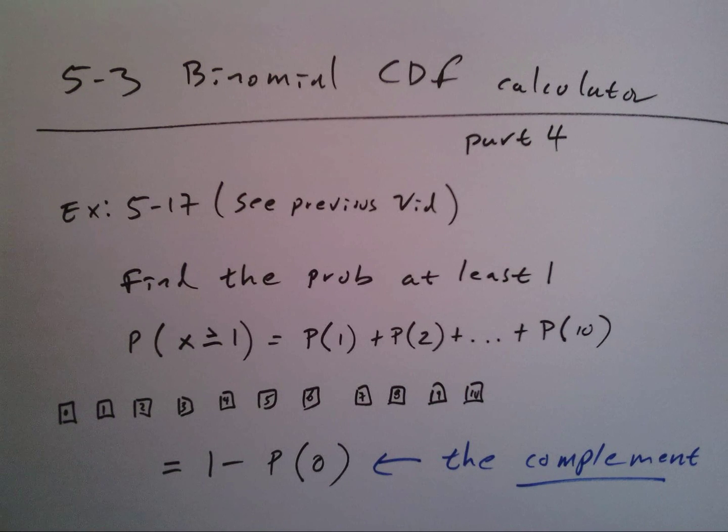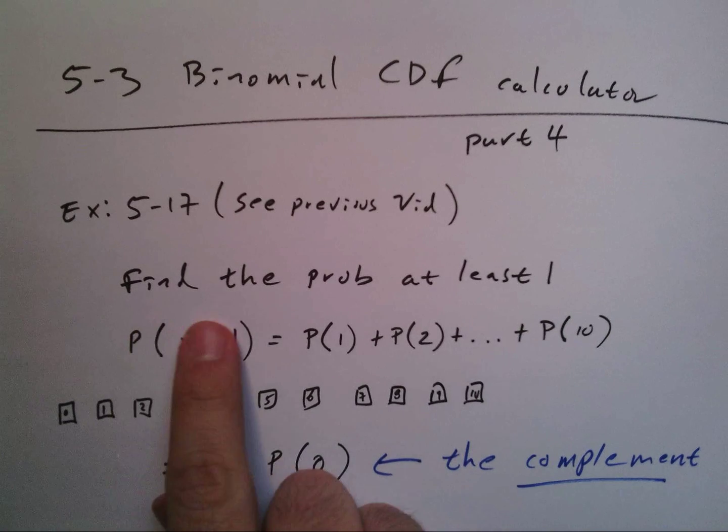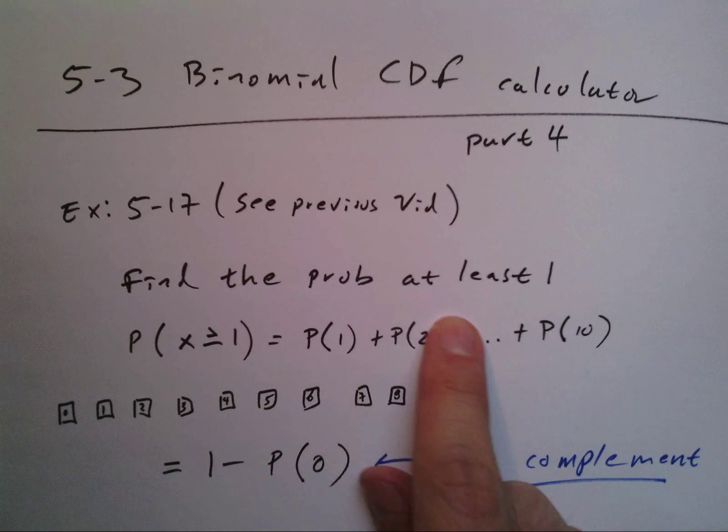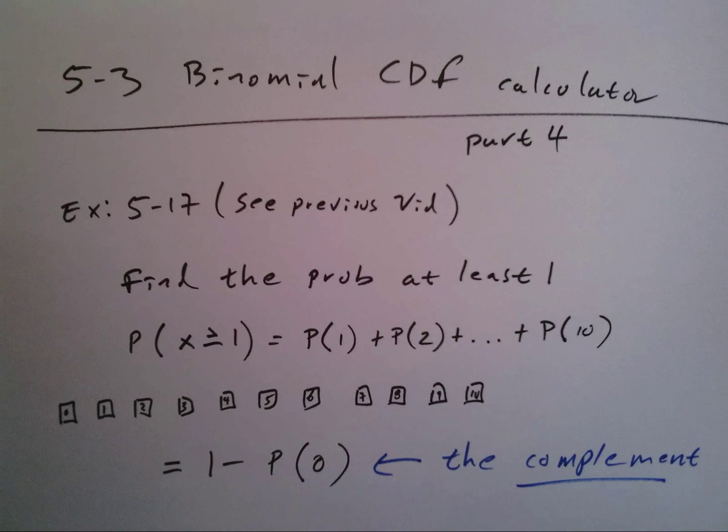Alright, this is 5.3 binomial CDF calculator part 4. Again, we're looking at example 5-17. This time I want us to find the probability of at least one. So what is the probability at least one?